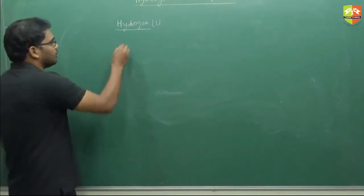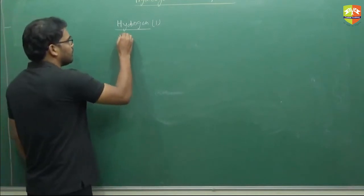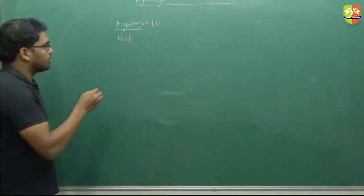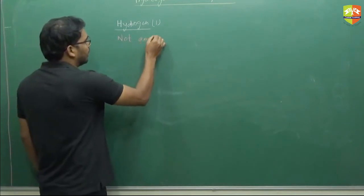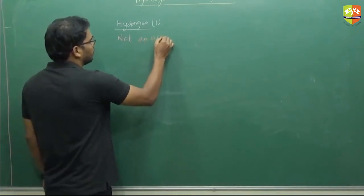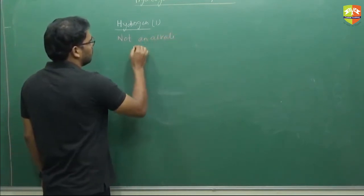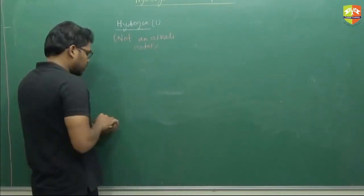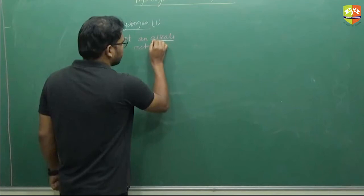Why is it not an alkali metal? Because it's like a halogen. But it is not an alkali metal. Why?